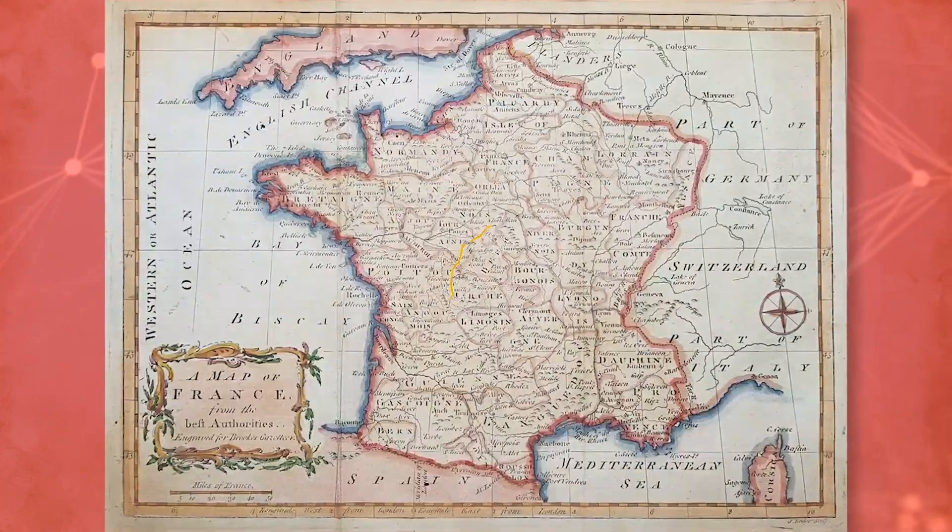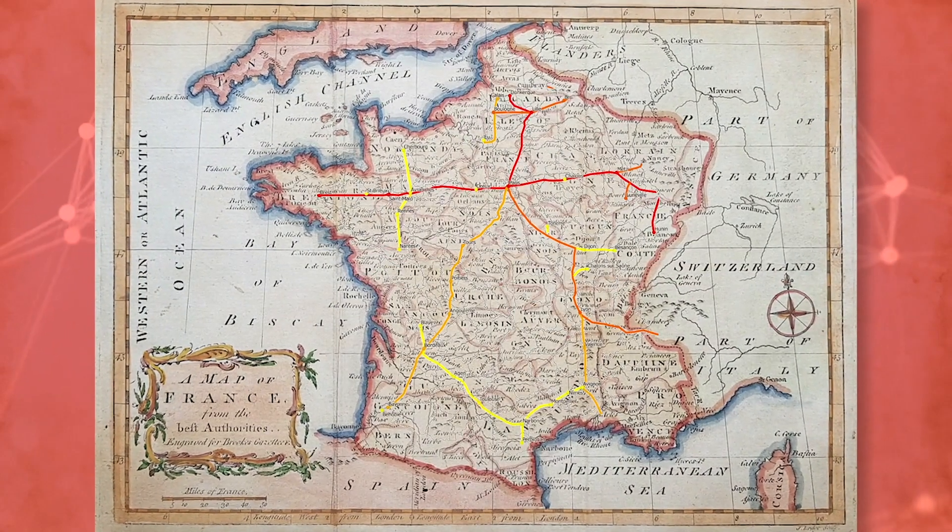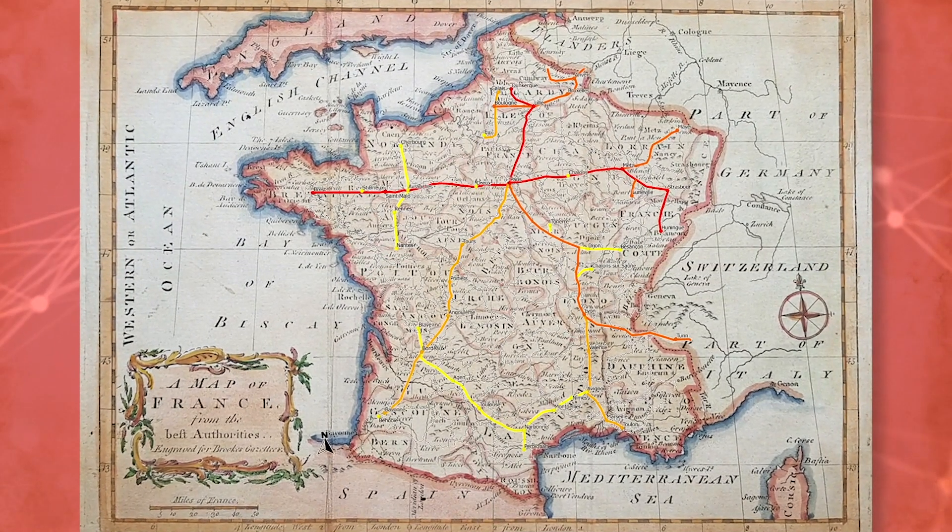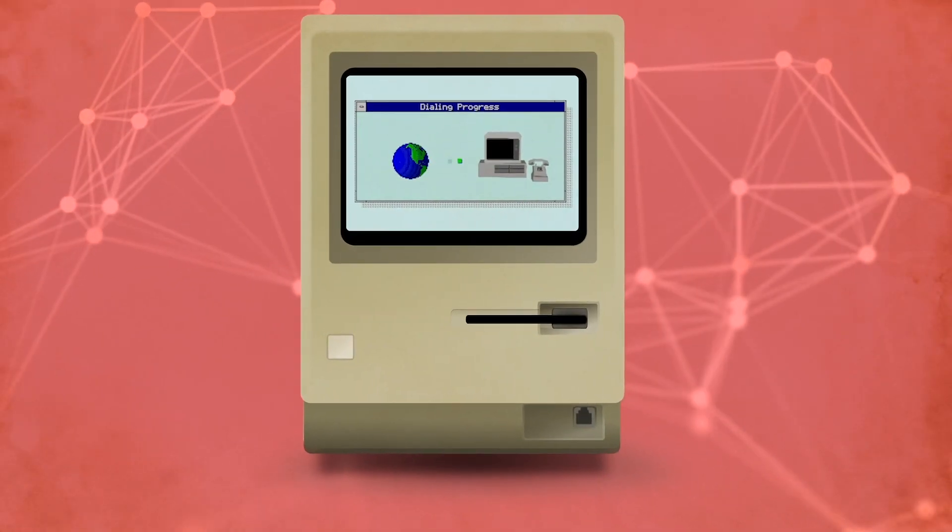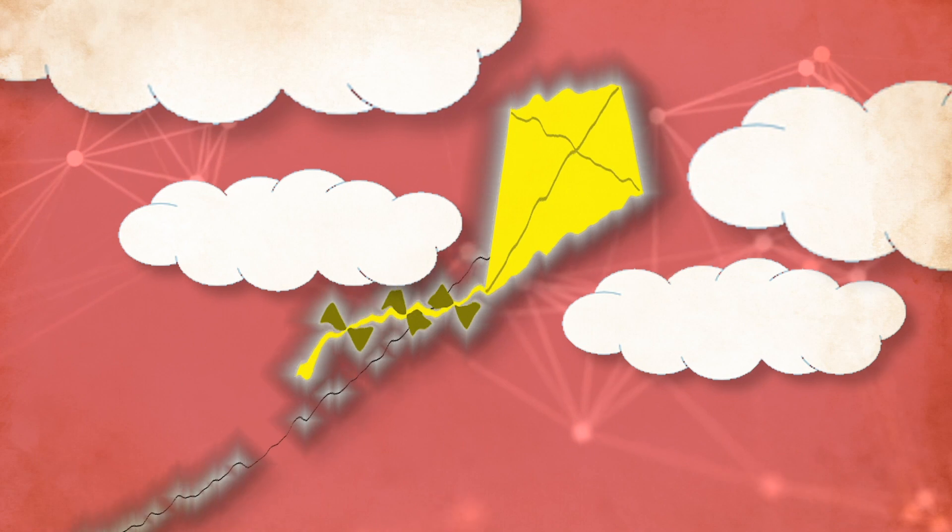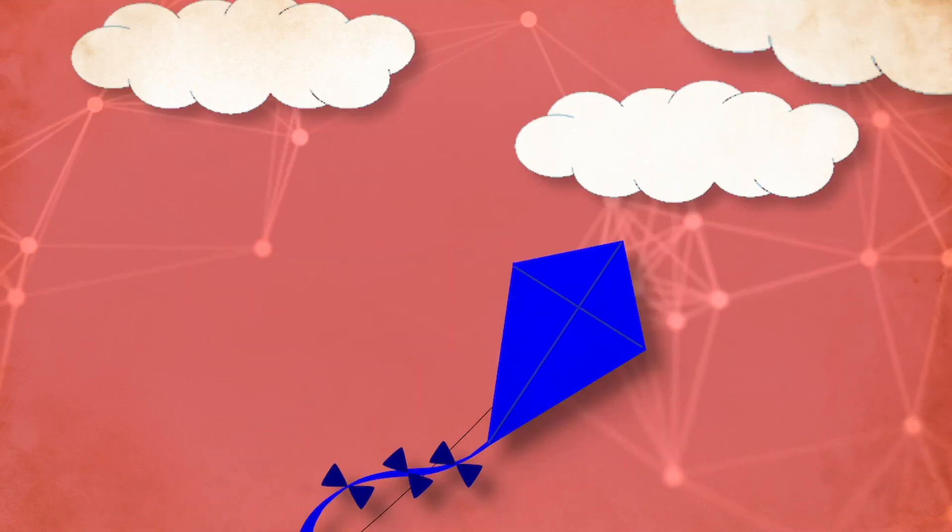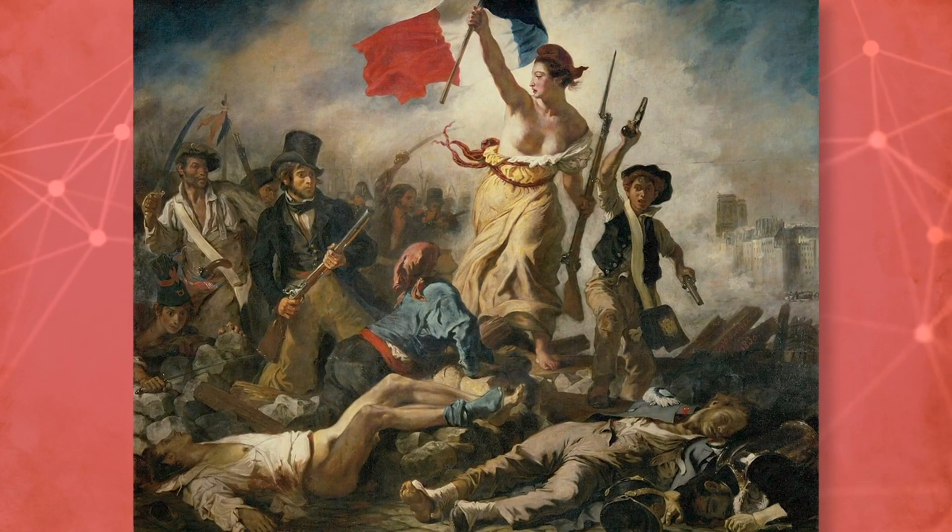He wanted to build a telecommunications network that would connect all of France. A nationwide internet, more or less. But this was in the 18th century. The digital computer was over a century away, electricity was just a twinkle in Benjamin Franklin's kite, and on top of that, a full-blown revolution was underway in France.